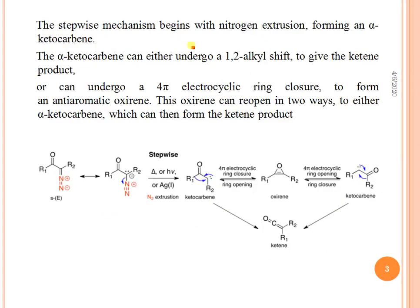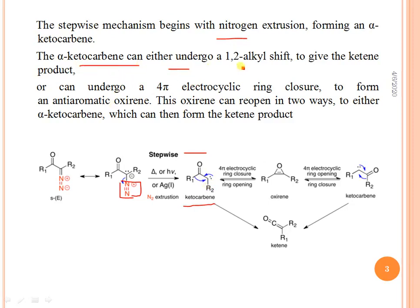The stepwise mechanism for the Wolff rearrangement begins with the extrusion of nitrogen, forming an alpha-ketocarbene. In the first step, removal of the diazo functional group — nitrogen extrusion — generates the alpha-ketocarbene. The ketocarbene can then undergo a 1,2-shift to give ketene.